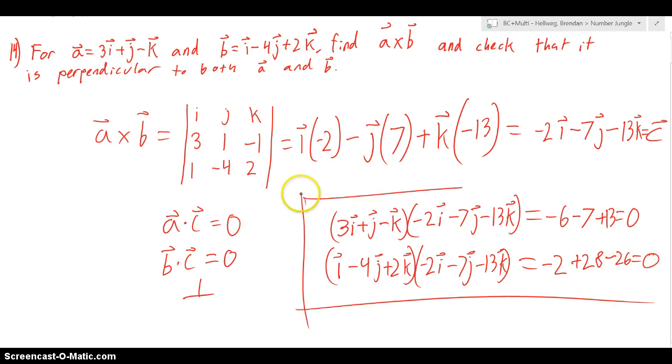So there we have it. We have now shown that this vector here is perpendicular to both a and b. And that means that it is the correct solution to a cross b. I hope you've learned a lot.